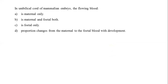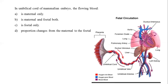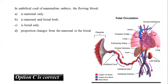In the umbilical cord of a mammalian embryo, the blood present is: maternal only, maternal and fetal, fetal only, or proportion changes with development? Blood flowing in the mammalian umbilical cord is 100% fetal and deoxygenated. The umbilical cord is an exception where arteries carry deoxygenated blood and veins carry oxygenated blood (the other exception being pulmonary vessels). The correct answer is option C: fetal only.